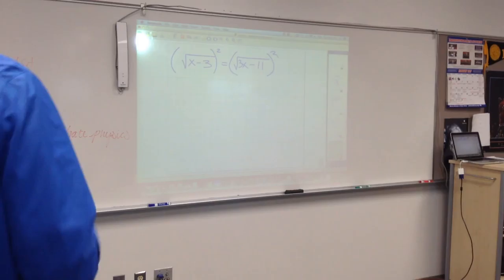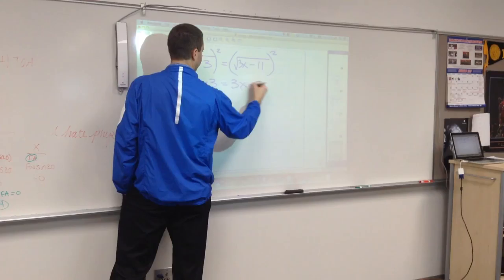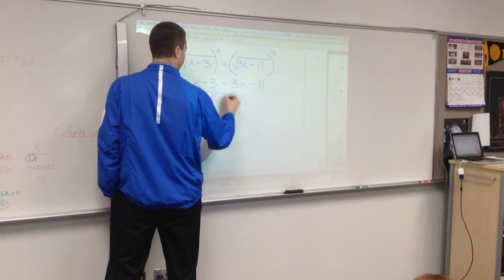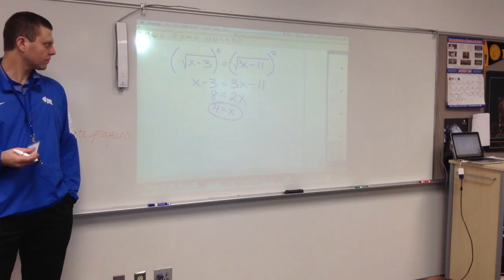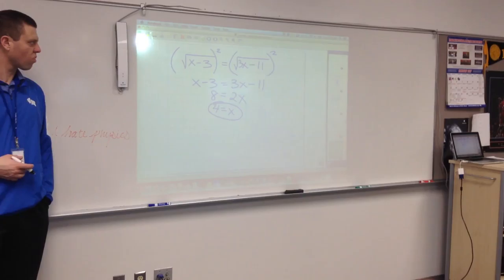And now you just simply have a nice little linear equation. X minus three equals three x minus eleven. Subtract x gives you two x. Add eleven gives you eight. So, x equals four. So far, so good?